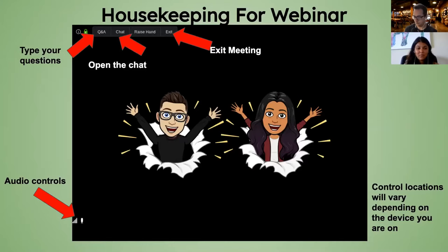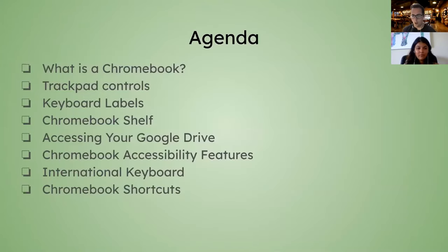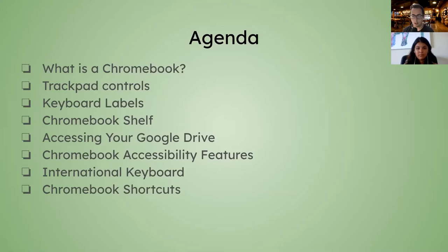Quickly, let's run through our agenda. We're going to talk about what a Chromebook is, go over some trackpad controls, go over different labels on your keyboard, talk about the Chromebook shelf, ways to access your Google Drive, accessibility features, switching between international and U.S. keyboards, and then we'll end with some Chromebook keyboard shortcuts.